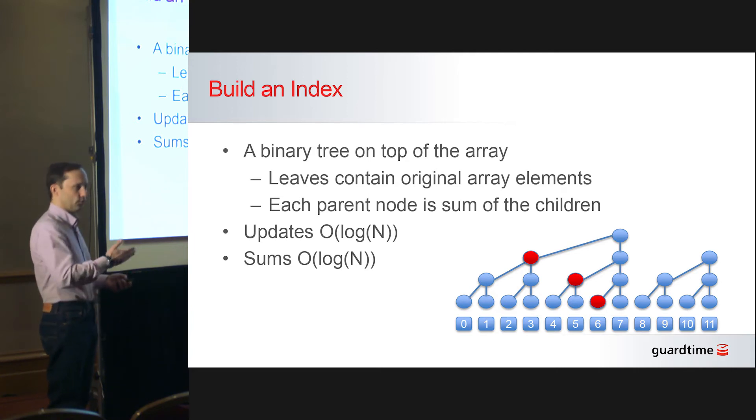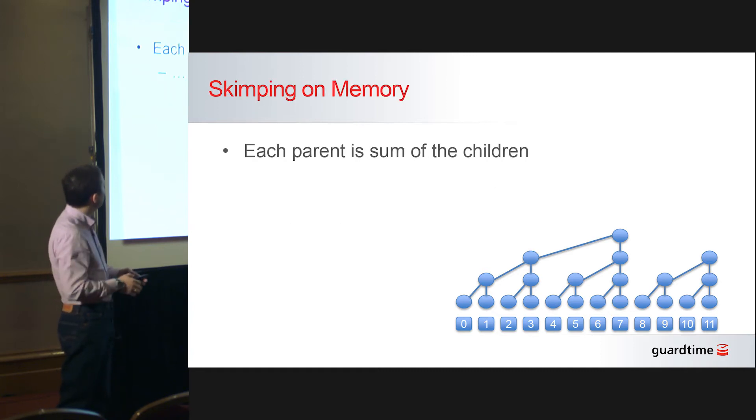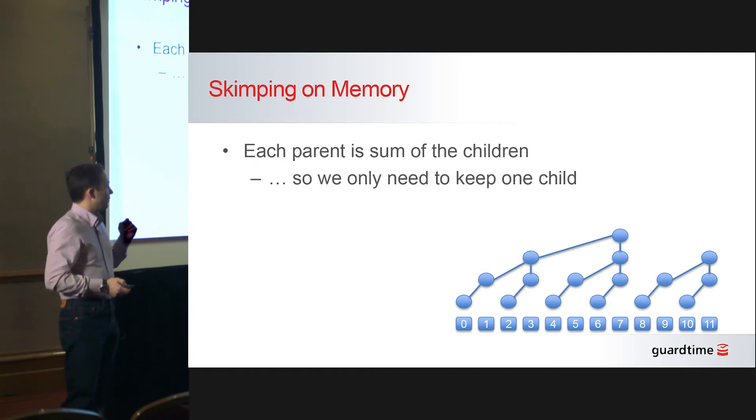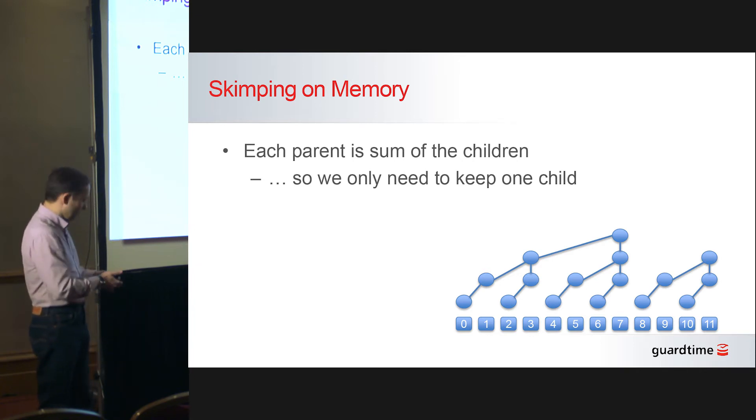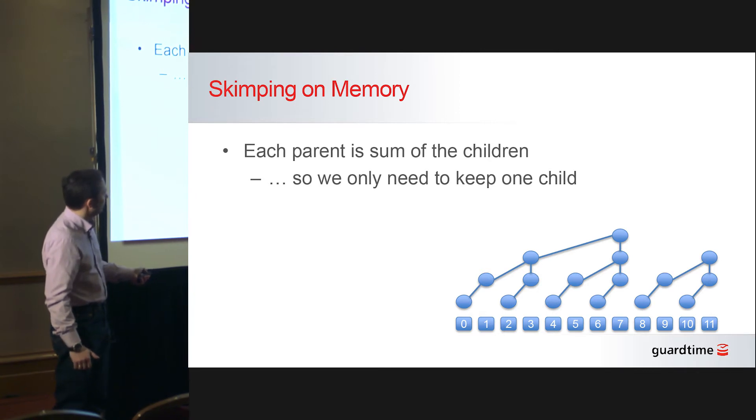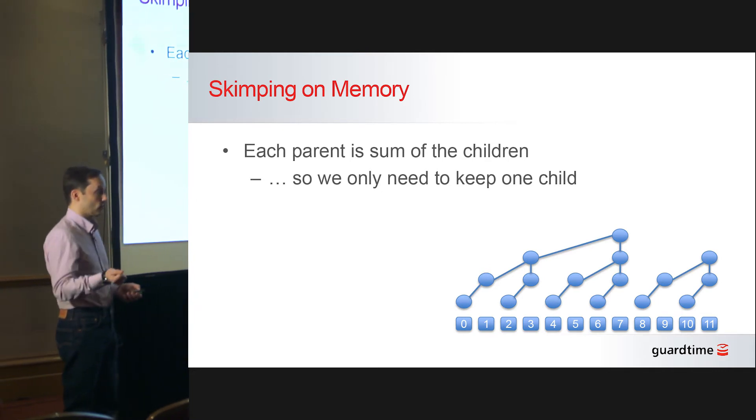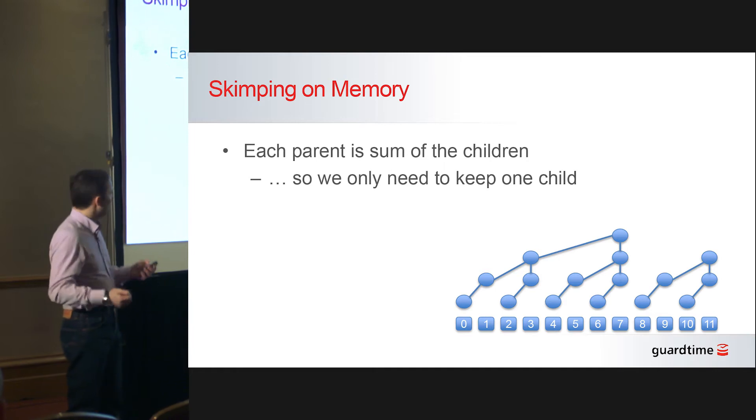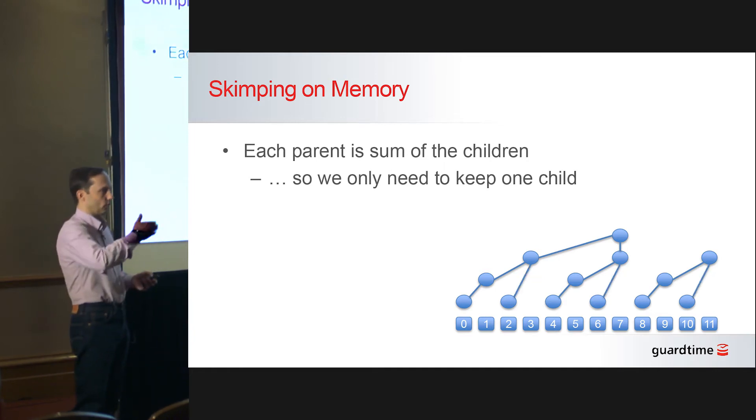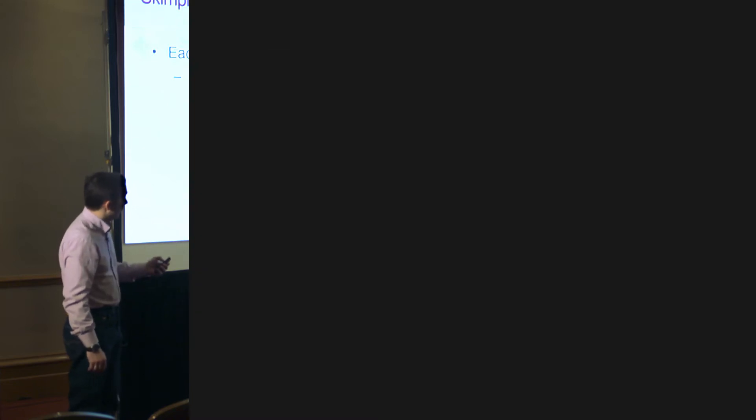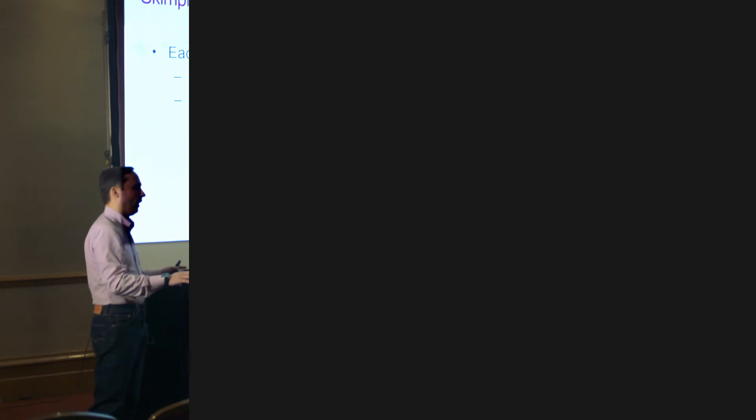Now the interesting part comes if you do not wish to allocate extra memory. Then you can observe that in each of those triples where you have two child nodes and the parent node, if the parent is a sum of children, we can throw away one of the child nodes and we can recompute it on the fly when we need it. So we can throw away one child from each pair of children, and we can do it again and again until we are left with few enough elements that they actually fit in the same array. So you can prune a tree and then whatever is left of it fits in the same array. You don't need any extra memory. And this is the magic bit.